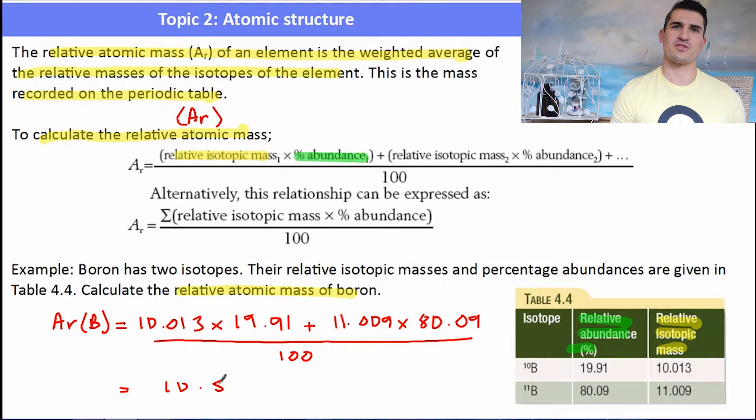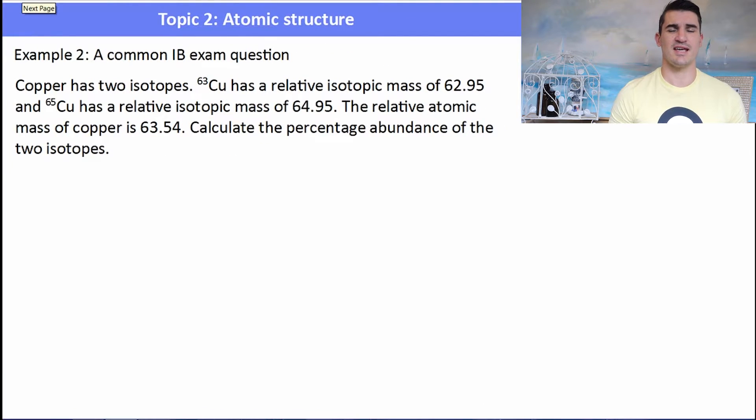Now if you think about this for a second, there's a lot more boron-11. So that means that when we do the weighted average, it's probably going to be closer to 11 than it is to 10. And in fact it's 10.81 atomic mass units, only four significant figures because the percentage was to four significant figures.